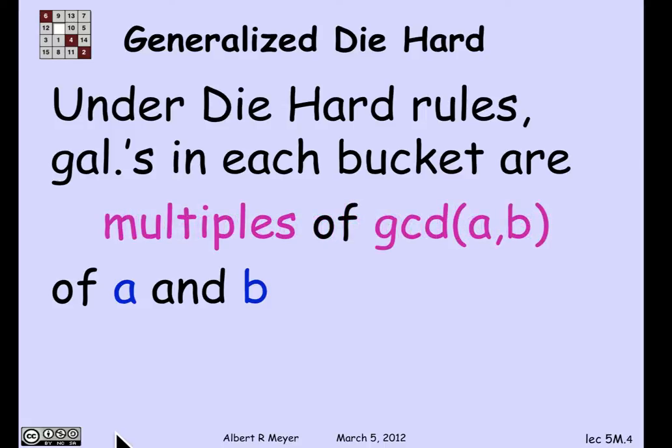The key point is that linear combinations of A and B are the same as multiples of the GCD. The reason is that the GCD is a common divisor of A and B, and therefore it divides any linear combination of A and B. So any linear combination of A and B is a multiple of the GCD. And since the GCD is itself a linear combination of A and B, linear combinations of A and B are exactly the multiples of the GCD.